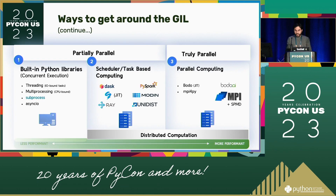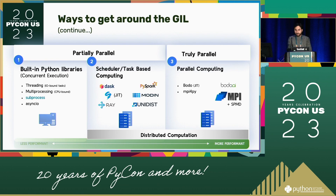On the left we have threading — good for IO-bound tasks — multiprocessing, mainly for CPU-bound tasks, and subprocess. We saw a few sessions about these at this conference. They all run on a single machine typically. In the middle we have PySpark, Dask, Ray, Modin, and Unidist, which can run on a cluster of nodes. And Numba, which can run on a single node for now. On the right we have Bodo and MPI for Python. Among these, Bodo and Numba also use just-in-time compilers.